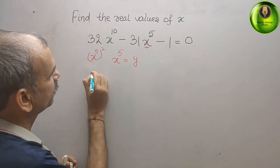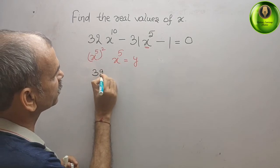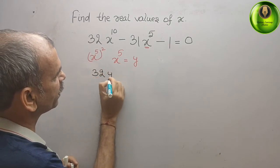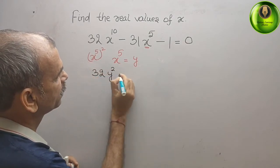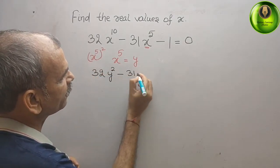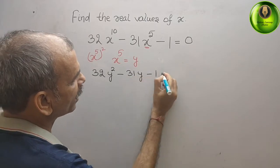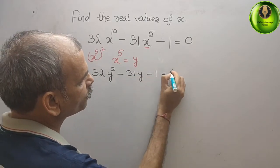Therefore, your new equation is 32y squared minus 31y minus 1 equals 0.